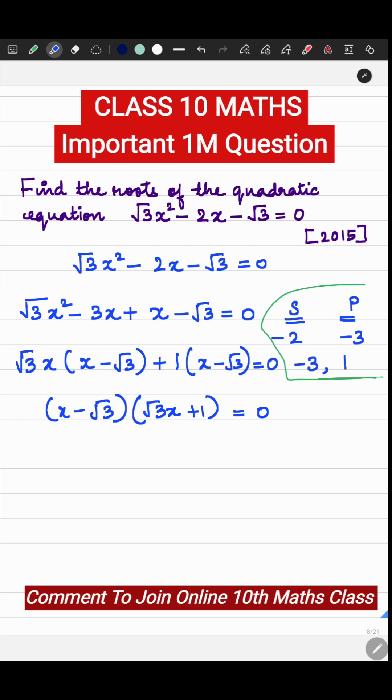So what are the roots then? You have to equate each one to 0. So x minus root 3 equal to 0. This is one of the root. So x is equal to root 3. This is your first root.